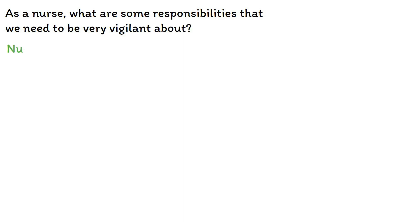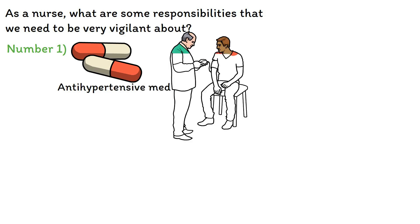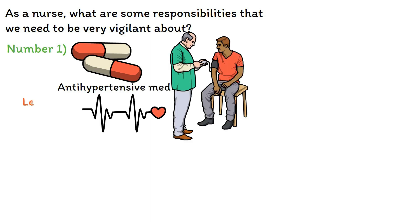As a nurse, there are responsibilities you need to be very vigilant about. With any antihypertensive medication, you need to monitor blood pressure and heart rate. If the blood pressure is less than 90 over 60, your patient should not receive their dose of the antihypertensive medication — so monitor that blood pressure.